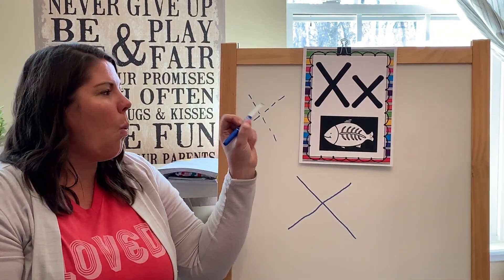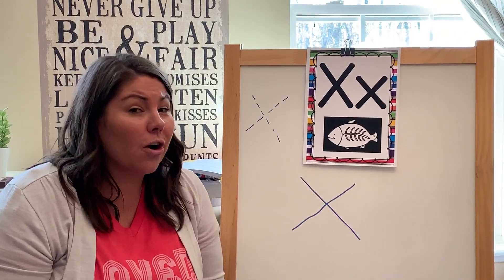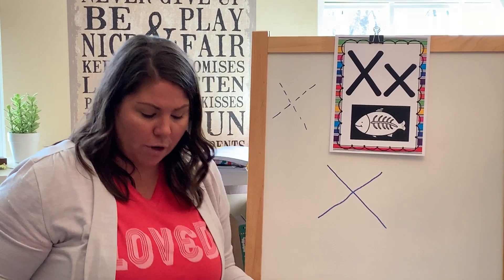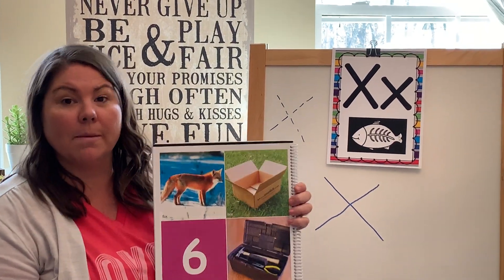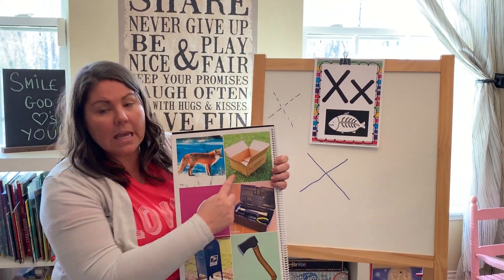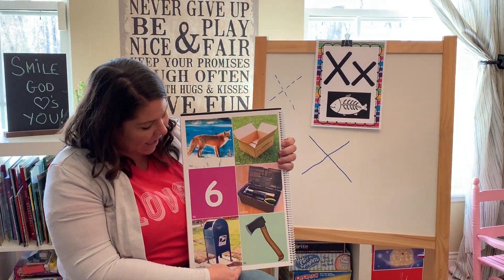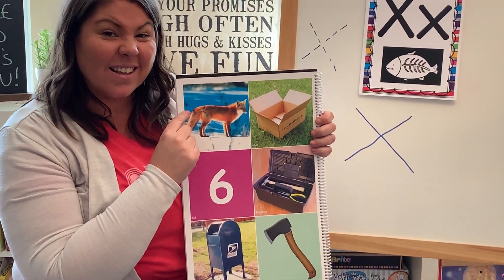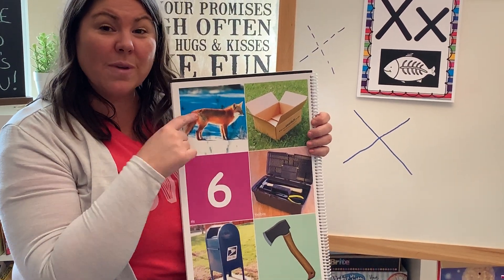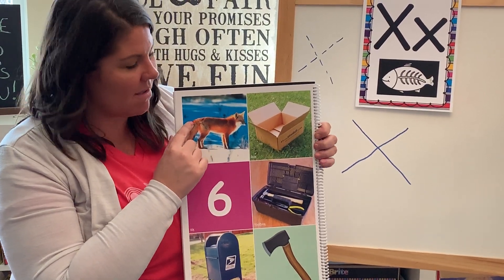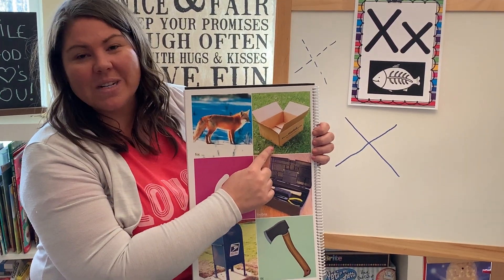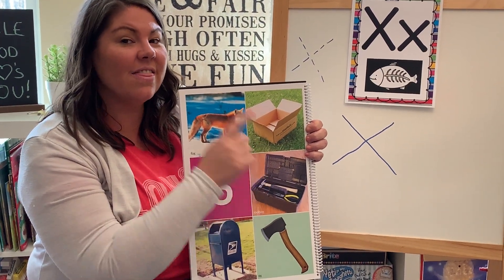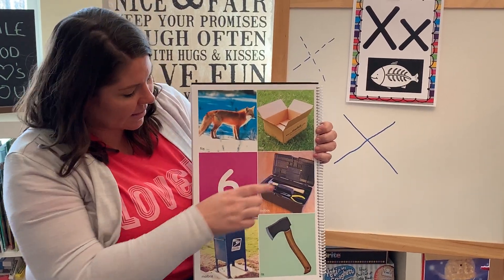Boys and girls, what words can you think of that either start with X or have X in them? I have a special book for you today with some pictures. What do you see here that has the letter X in it? What's this a picture of? It's a fox. This week we're learning all about animals. We have an animal that has an X in its name. What's this a picture of? The box. Hear that sss sound at the end? That's the sound that X makes.